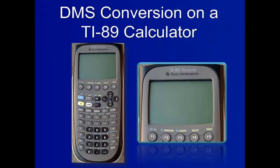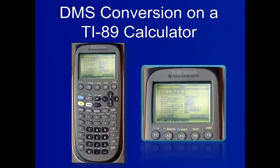It is important to make sure that the calculator is in degree mode. To set the TI-89 to degree mode, simply click the mode key, then scroll down to the option labeled angle.